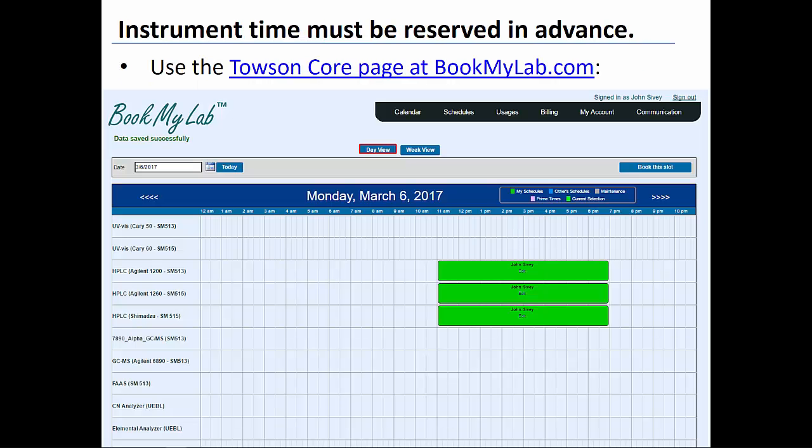Prior to using an HPLC, users are required to reserve the instrument using the Towson Core page at BookMyLab.com. Authorized users will be given permission to access this site after all training requirements are satisfied. The Towson Core site is used to reserve instrument time for all shared instruments housed within the Department of Chemistry and the Urban Environmental Biogeochemistry Laboratory at Towson University.